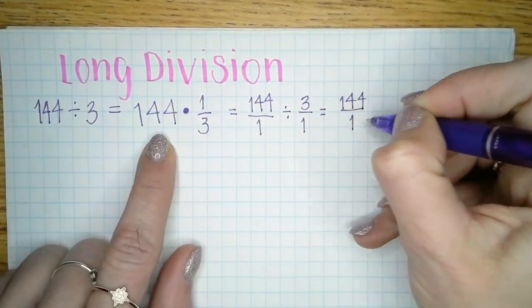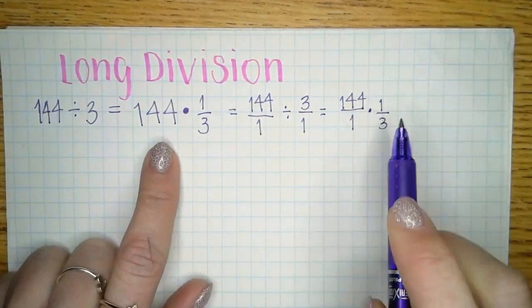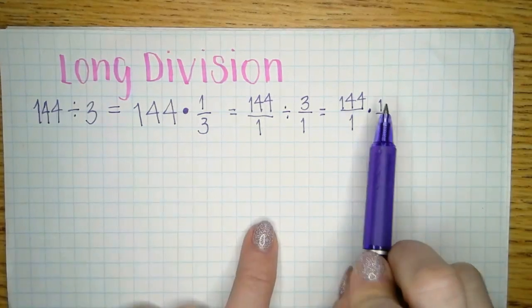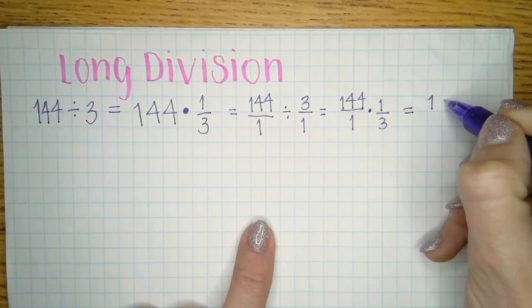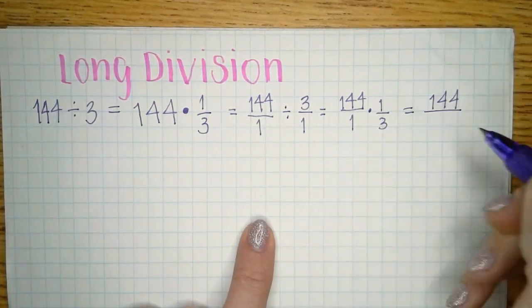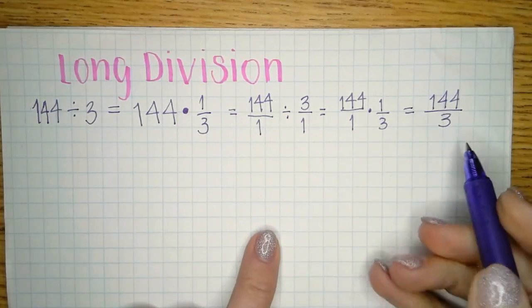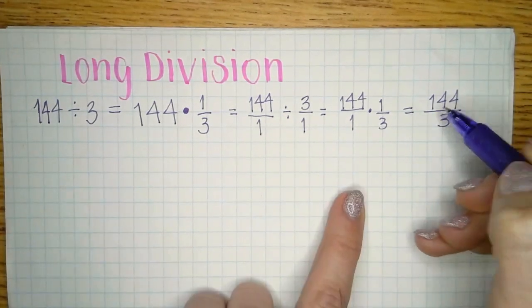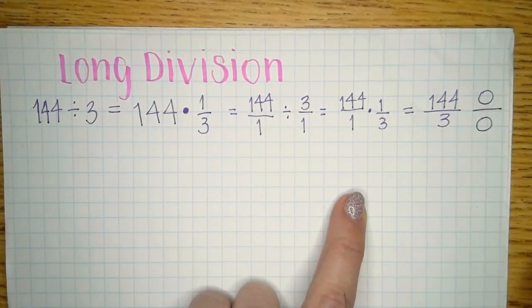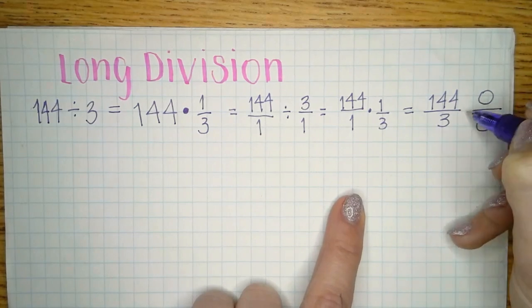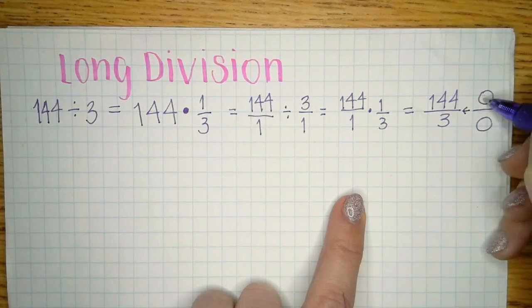How do you multiply fractions? 144 times 1 is 144, over 1 times 3 which is 3. You don't need a common denominator to multiply fractions — you end up with a fraction. Division is a fraction. The division symbol is basically fill-in-the-blanks for a fraction: here's where the 144 goes, and that's where the 3 goes.